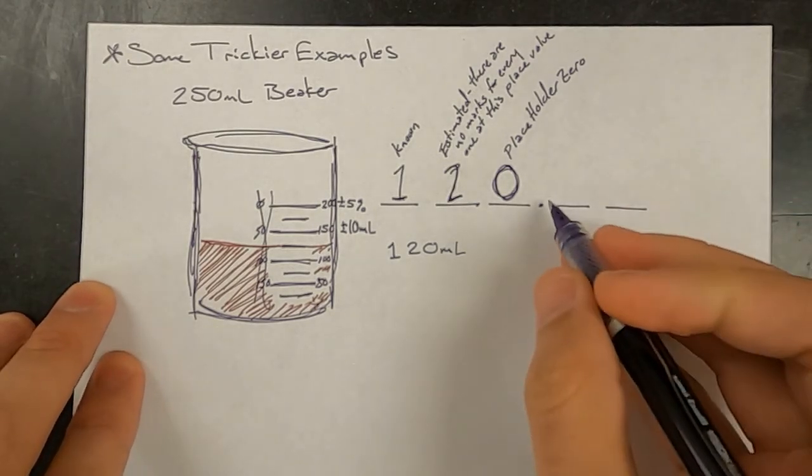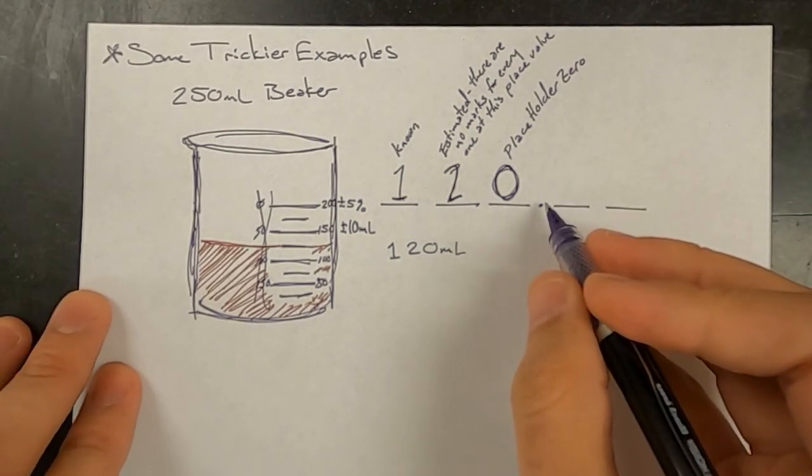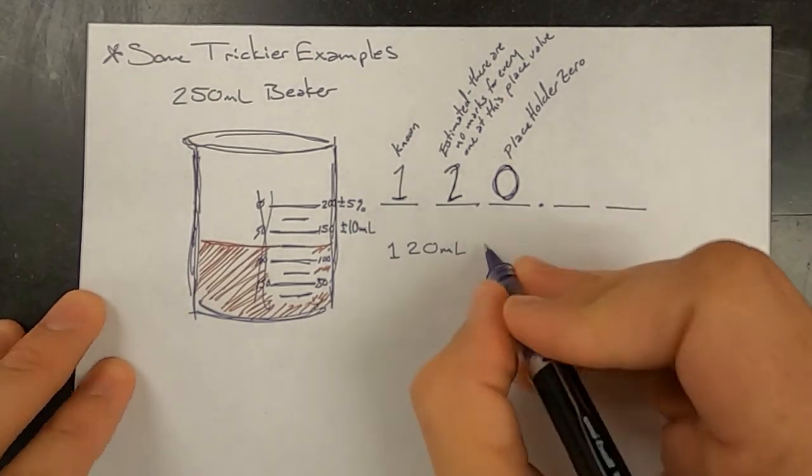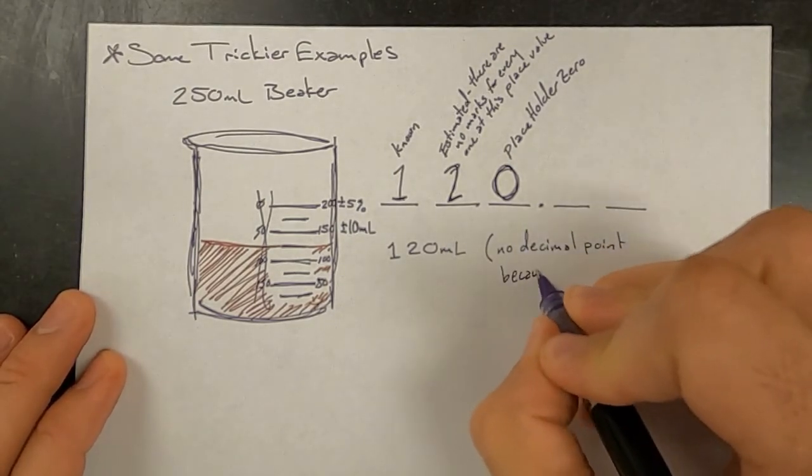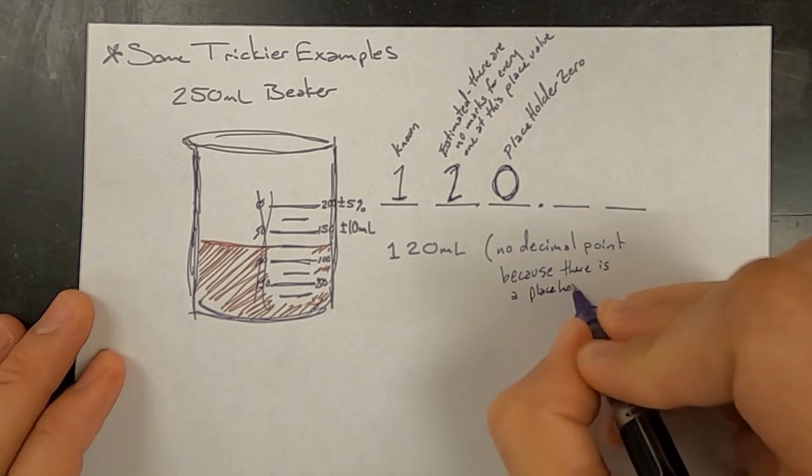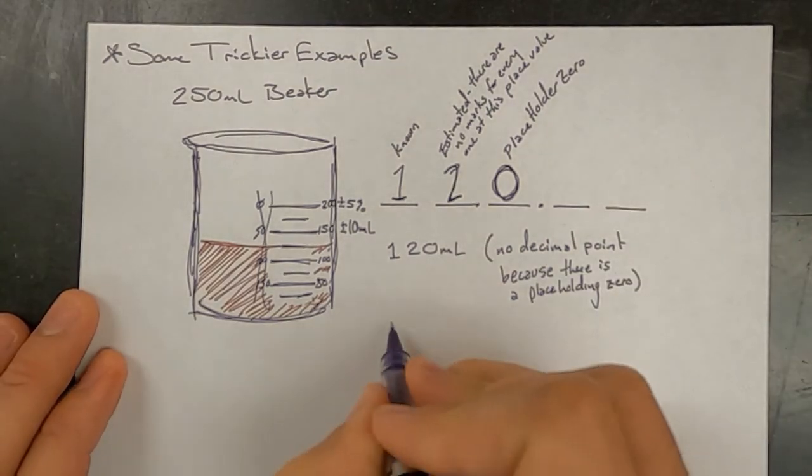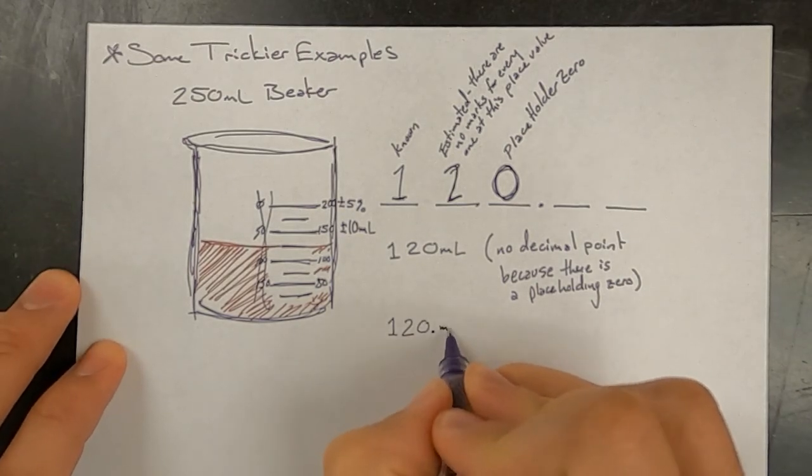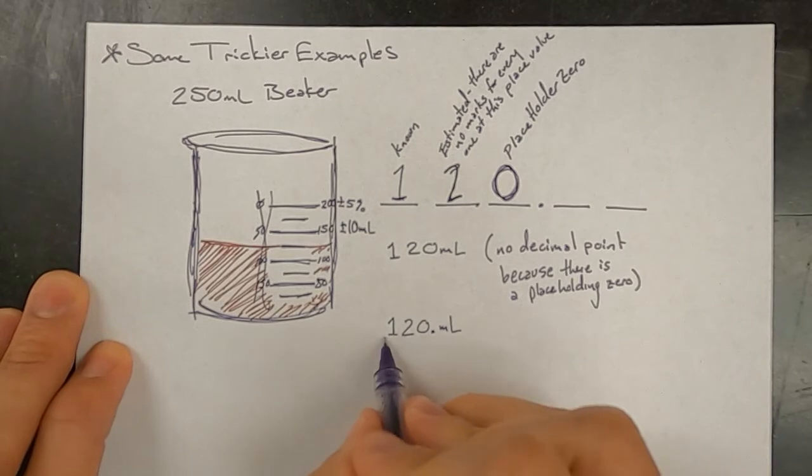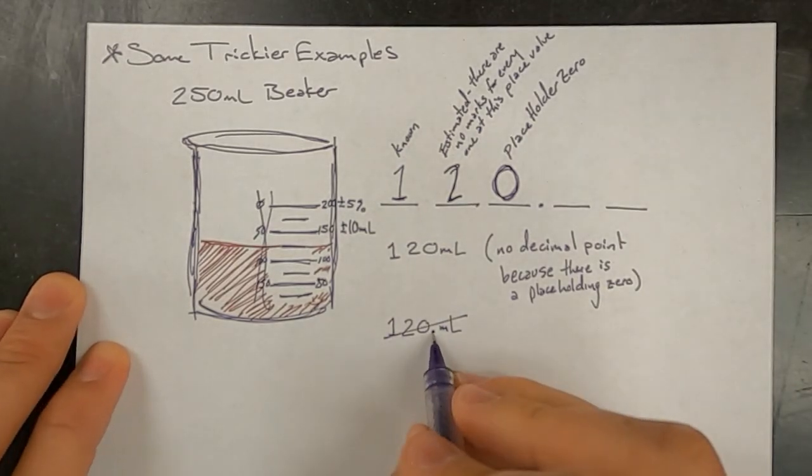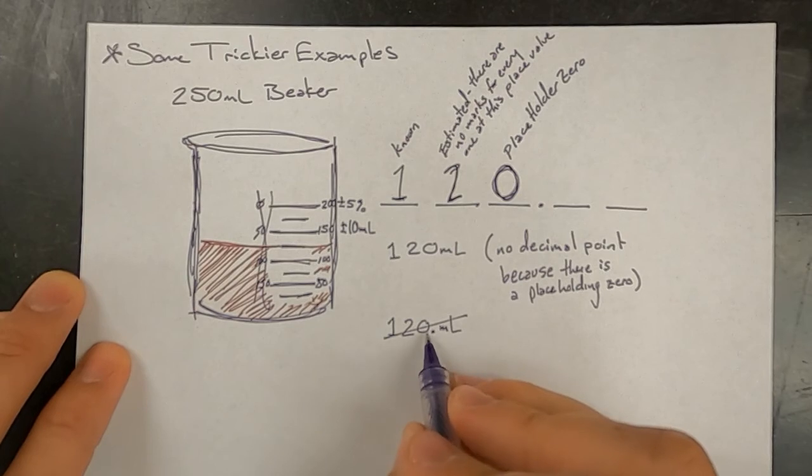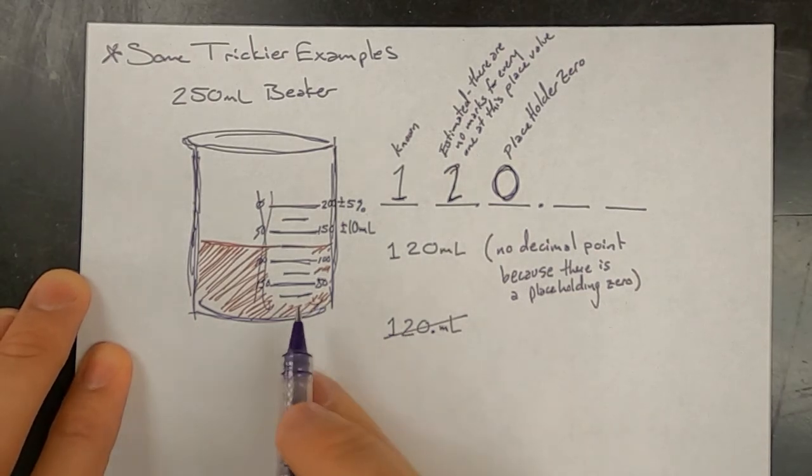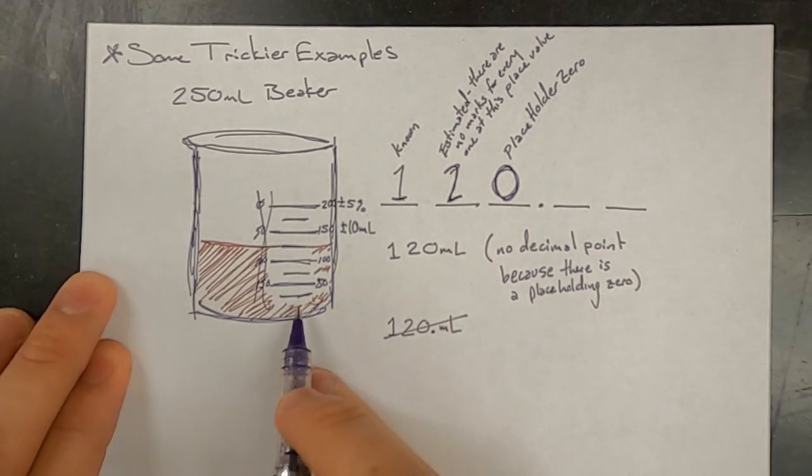I did not put the decimal point because if there's a placeholding zero in a measurement, you don't put a decimal point. So if someone did write 120 and then a point milliliters for this measurement, that would be marked incorrect. Because what it tells you, having a decimal point there tells you that the zero was estimated and the one and the two were both known, which was not the case. This piece of lab equipment did not give us that amount of detail.